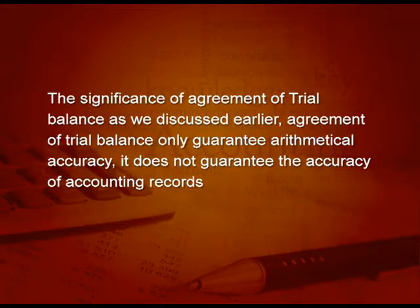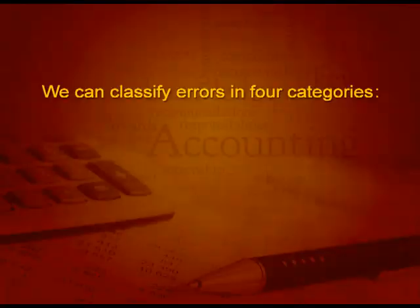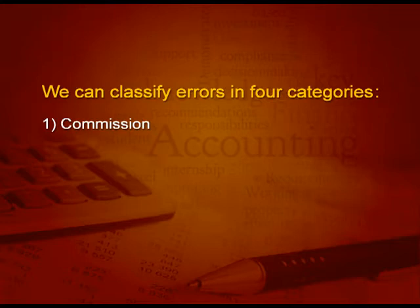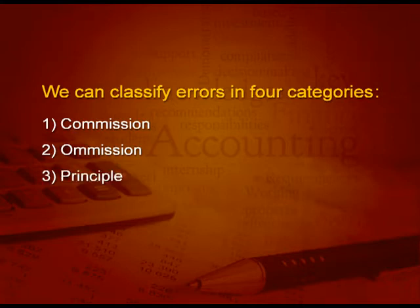The agreement of trial balance only guarantees arithmetical accuracy; it does not guarantee the accuracy of accounting records. There can be errors which affect the trial balance and some errors which do not. In totality, errors can be classified into four categories: first, error of commission; second, error of omission; third, error of principle; and fourth, compensating errors.